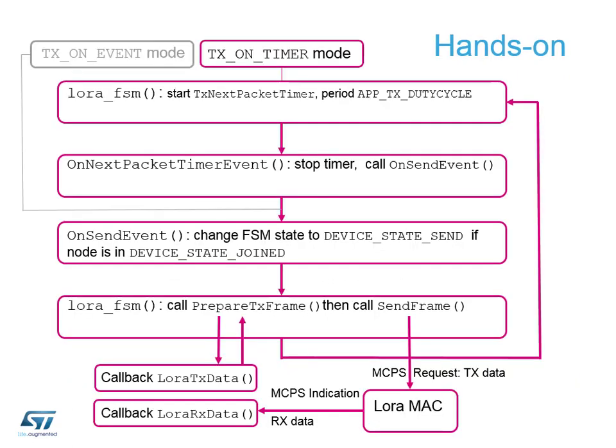Here's the same information in a flow diagram. We start the timers; the LoRa finite state machine takes the parameters we've keyed in to control those two timers. When the next-packet timer event triggers, we stop that timer and call a send event. The send event checks the status of our finite state machine to confirm we are in a joined state, then calls prepare-TX-frame, which in turn calls our lora_tx_data callback routine, and then sends the frame down to the LoRa MAC through the common port services.